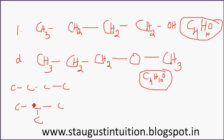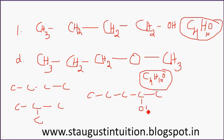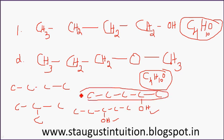Butane isomers and propane isomers are examples of chain isomers. For position isomers: 1, 2, 3, 4, 5 — the groups are the same, here are 5 carbons and here are 5 carbons. The word root is the same.